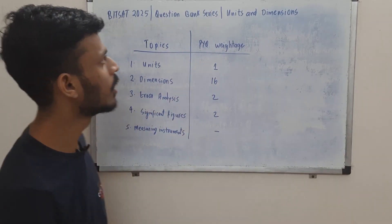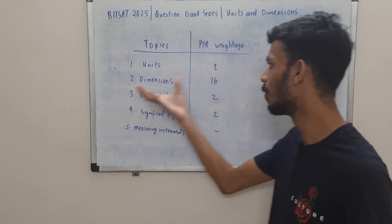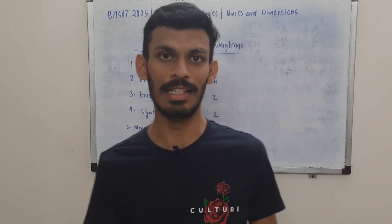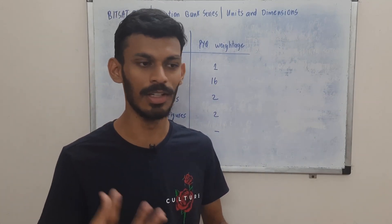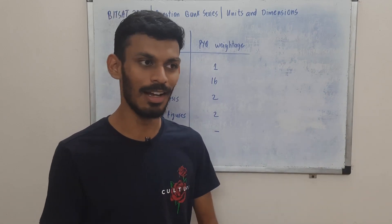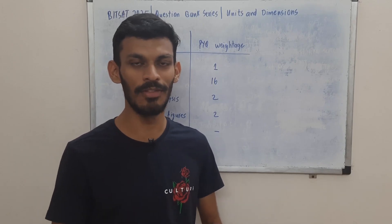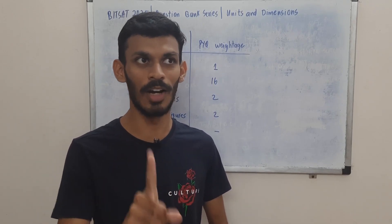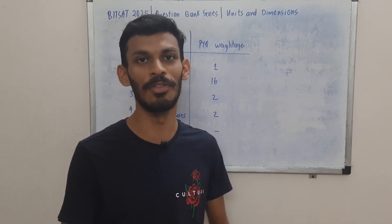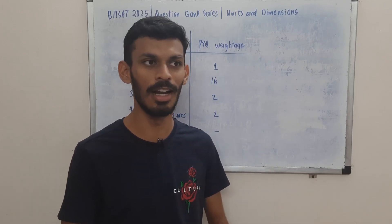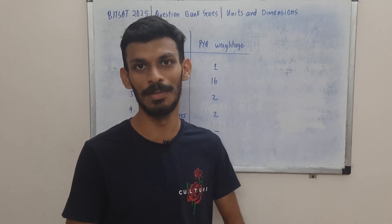Units and Dimensions is a very important and very simple topic for BITSAT. If you get a hold of dimensions, everything else is very easy, and by practice you can do it. It's one of the simplest and easiest chapters out there. If you are appearing for BITSAT 2025, mark my words — at least one to two questions will be there from this chapter, irrespective of the shift. It will give you about six or more marks in BITSAT 2025.